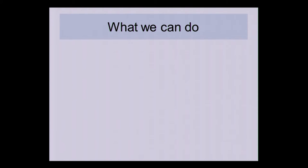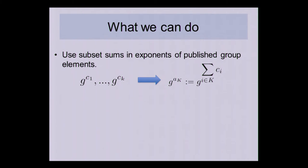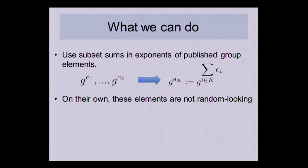What we can do is use the normal group operation, which gives us subset sums in the exponent instead of subset products. So I'd publish g^(c_1) through g^(c_k) and replace g^(a_k) with subset sums of g^(c_1) through g^(c_k). The problem is that on their own, these elements don't look random anymore — you can distinguish whether the a_k were created via this subset sum construction or chosen independently and randomly.